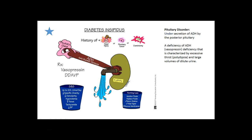Diabetes insipidus occurs when there is an under-secretion of ADH from the posterior pituitary. Think about it: if your body's not making enough antidiuretic hormone, there's nothing regulating your body's fluid, so the biggest symptom is anywhere from 3 to 20 liters of urine produced per day. Because of all that diuresis, you're going to see lower specific gravity, low osmolarity, hypovolemia, increased thirst, tachycardia, and decreased blood pressure. From a nursing standpoint, it's all about fluid replacement, monitoring fluids, watching neuro status, monitoring vital signs and mucous membranes.